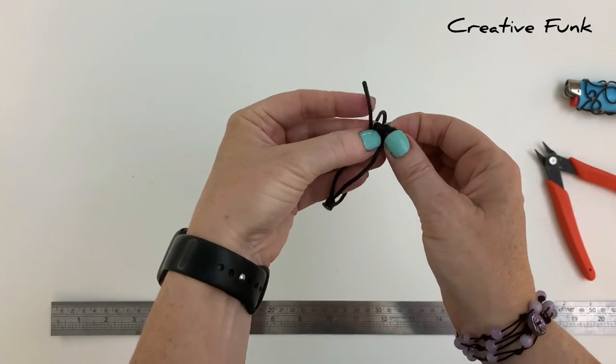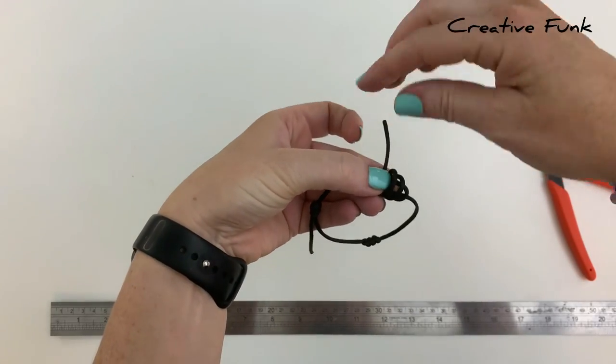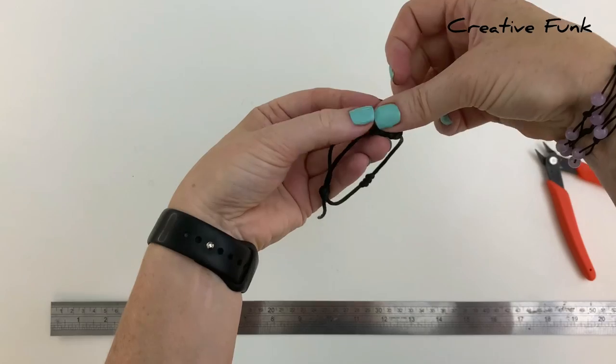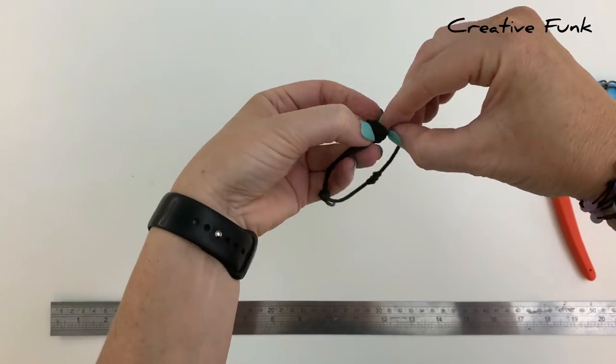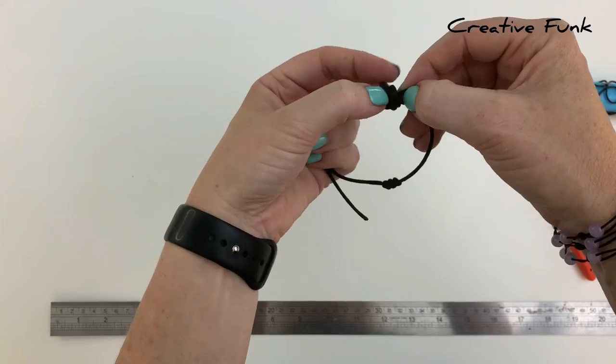Now once you've got your three loops, we can gently bring this tail end around, poking it down all three loops and pulling it out the right hand side. You want to work your knot down nice and gently.